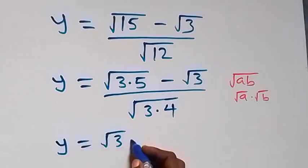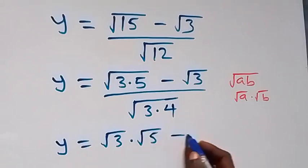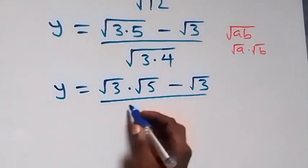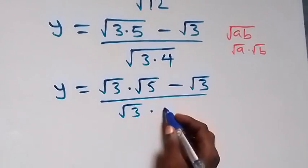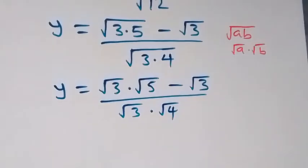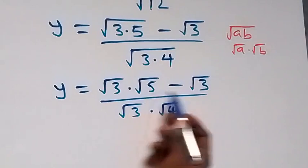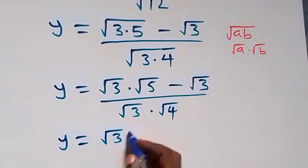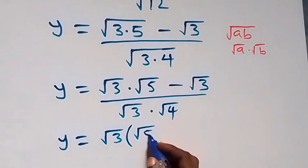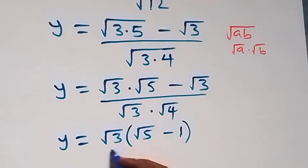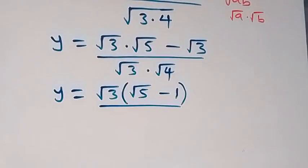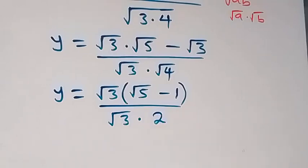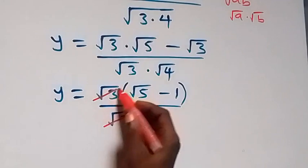So y equals √3 × √5, minus √3, then divided by √3 × √4. We factor out √3 as common from the numerator, giving y = √3(√5 - 1) over (√3 × √4). Here √4 equals 2, and the √3 terms cancel each other.